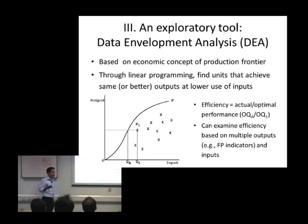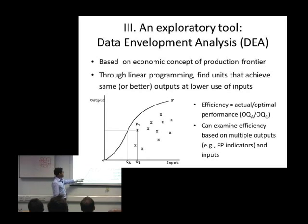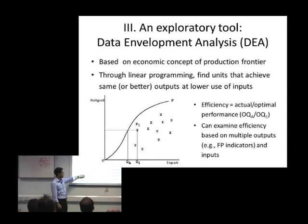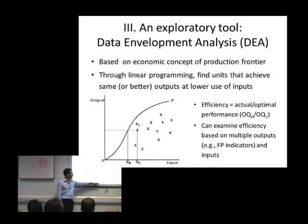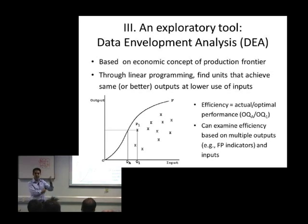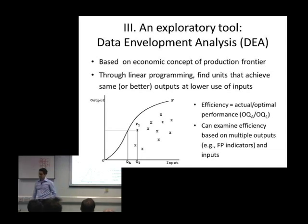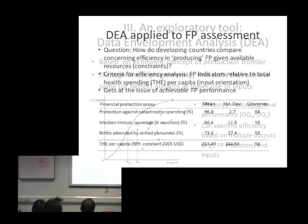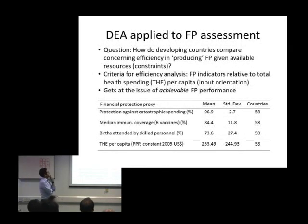One of the advantages of DEA is that you don't need to specify a functional form, since it is estimated non-parametrically. But the main advantage of this methodology is that it allows us to look at several inputs and outputs simultaneously, which is particularly attractive when dealing with a multi-dimensional concept like financial protection. This potentially allows us to assess financial protection using multiple indicators at the same time.